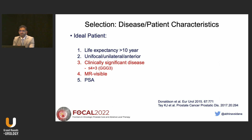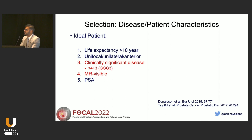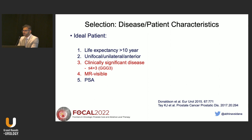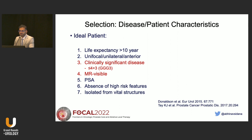PSA is the fifth criteria and is a little controversial. Some consensus statements say PSA should be less than 10. There are dozens of clinical trials that have enrolled patients with PSA less than 15, and in my practice I use PSA less than 20. As long as patients fall within an intermediate-risk population and distant disease is ruled out, they can be offered focal therapy.